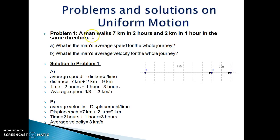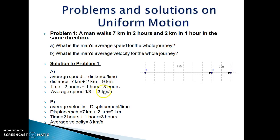Let's try to solve one numerical. A man walks 7 km in 2 hours and 2 km in 1 hour in the same direction. We are interested to find the average speed and average velocity of the whole journey. As shown in the figure, the man is moving in the same direction from A to C. Total distance covered is 7 km plus 2 km, that is 9 km, in a total time of 3 hours. So average speed is 9 divided by 3, which gives 3 km per hour.